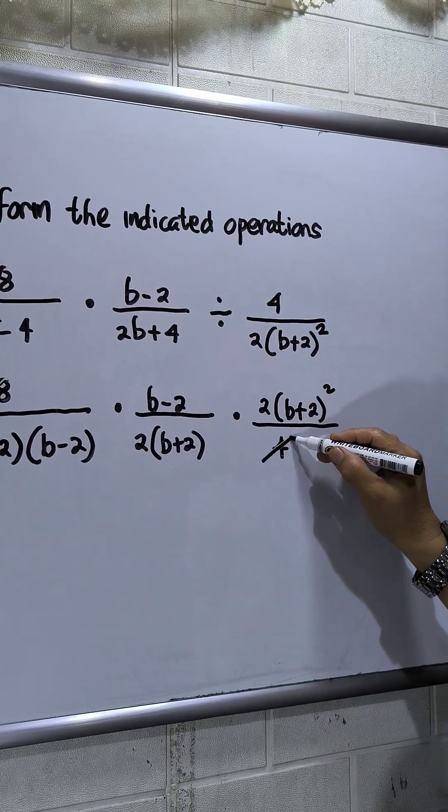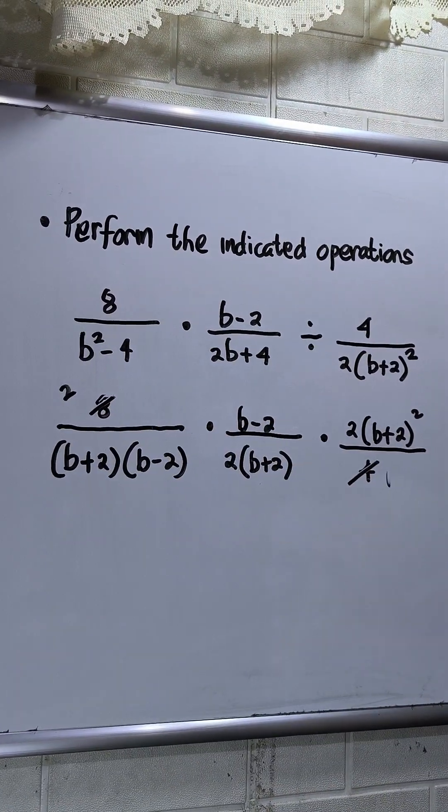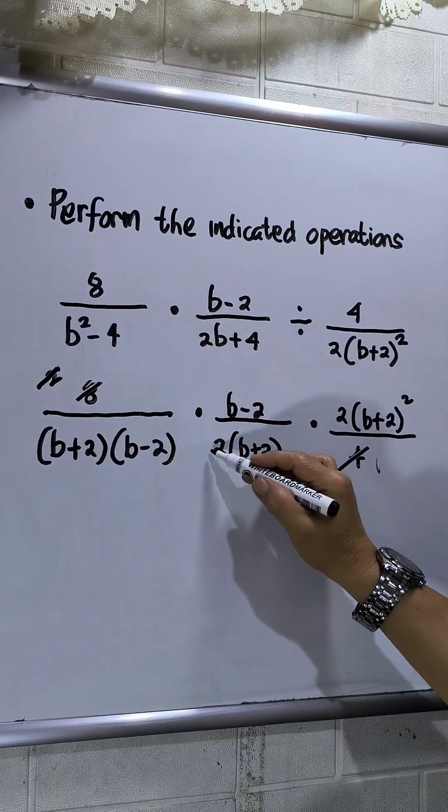Now I'll cross out and simplify. 4 divided by 4 equals 1, then divide by 4, that's 2. And then 2 divided by 2 equals 1.